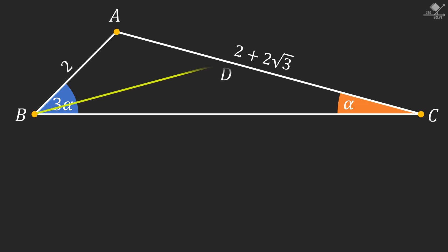Start with drawing a line segment, connecting point B and a point D on line segment AC. And let this line segment divide angle B into 2 alpha and alpha degrees.